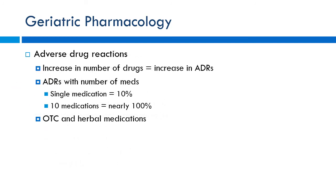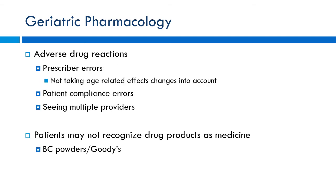Adverse drug reactions increase with more medications — starting at maybe 10% with a single drug, approaching nearly 100% with ten drugs. Patients may not realize a new symptom is a side effect; they may think they're just getting constipated because they're getting older, when it's actually medication-induced. Always educate patients about what side effects to look for. Also maintain open, non-judgmental conversations about herbal medications, because if patients feel judged, they won't tell you — and that can lead to dangerous interactions like the ginkgo-warfarin case.